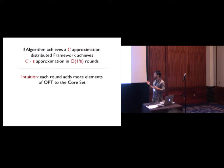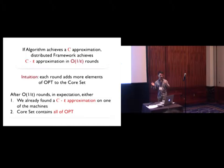I'm not going to talk about the details in the proof, but one intuition. What is the intuition behind the analysis? The main intuition behind the analysis is that each round adds some elements of OPT to our core set. So that if we grow our core set over all of 1 over epsilon rounds, in expectation, we have either found a C minus epsilon approximation in one of the executions, in one of those machines, or that core set is going to contain all of them. And then when we run on a machine, we're going to have a good approximation.